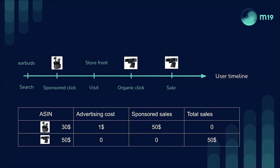When we look at the data for the camera, it's the other way around. We won't see the advertising costs linked to the click we saw before, because it's not the product that was clicked. We didn't pay for this advertising. The sponsored sale will be at zero — we won't report a sponsored sale to the camera, even though it was the camera that was bought. But when we look at the business report total sales per ASIN for the camera, we will find the $50 of this transaction.